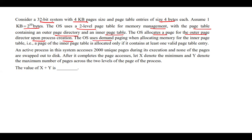The operating system uses demand paging when allocating memory for the inner page table. That is, a page of the inner page table is allocated only if it contains at least one valid page table entry. An active process in this system accesses 2000 unique pages during its execution and none of the pages are swept out to disk. After it completes the page access, let x denote the minimum and y denote the maximum number of pages across two levels of the page of the process. The value of x plus y is...